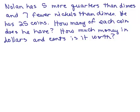Okay, here's a more advanced one. Nolan has 5 more quarters than dimes and 7 fewer nickels than dimes. He has 25 coins. How many of each coin does he have? And how much money in dollars and cents is it worth? Well, this is a pretty involved problem here. So first of all, it wants to know how many coins. How many of each coin does he have? Now what kind of coins are we talking about? We've got quarters, dimes, and nickels.